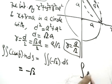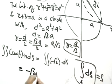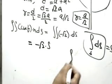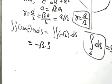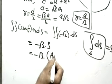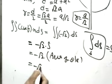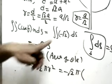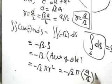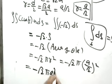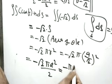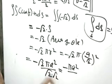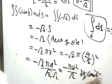Taking −√2 outside the surface integral, we get −√2 times the double integral of ds, which equals −√2 times the area of the circle. The area of the circle is πr² = π(a/√2)² = πa²/2. So the result is −√2 × πa²/2 = −πa²/√2, which can also be written as −πa²√2/2.